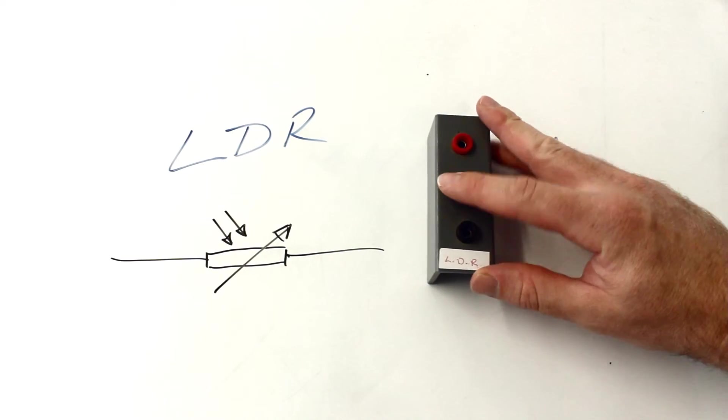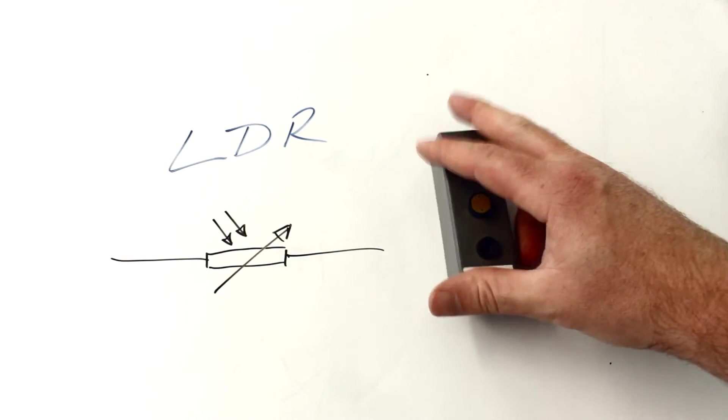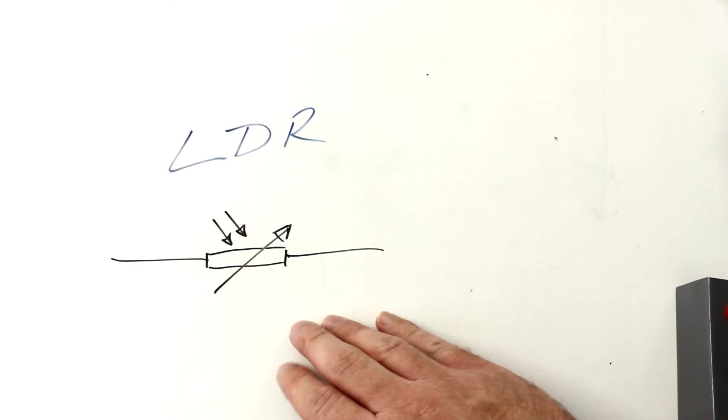This is an LDR. It's a light-dependent resistor. So that little thing on there, it can be used as a light sensor. The resistance of this depends upon the light. That's the symbol. The two little arrows coming in represent the light.